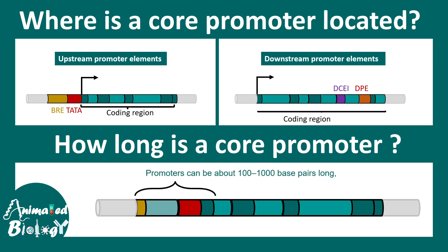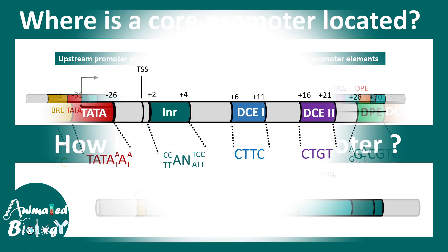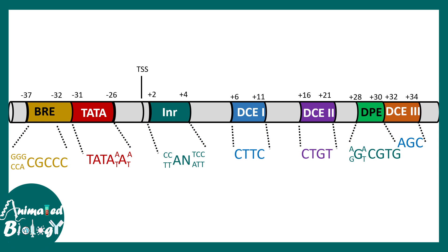A core promoter element can be roughly 100 to 1000 base pairs long, depending on the specific gene and promoter element. Examples of generic core promoter elements include BRE, TATA, INR, DCE, DCE2, and DPE. Not all these elements exist in every promoter — these represent the majority of possibilities, and in a real-life scenario, particular combinations of these would exist in any given promoter.